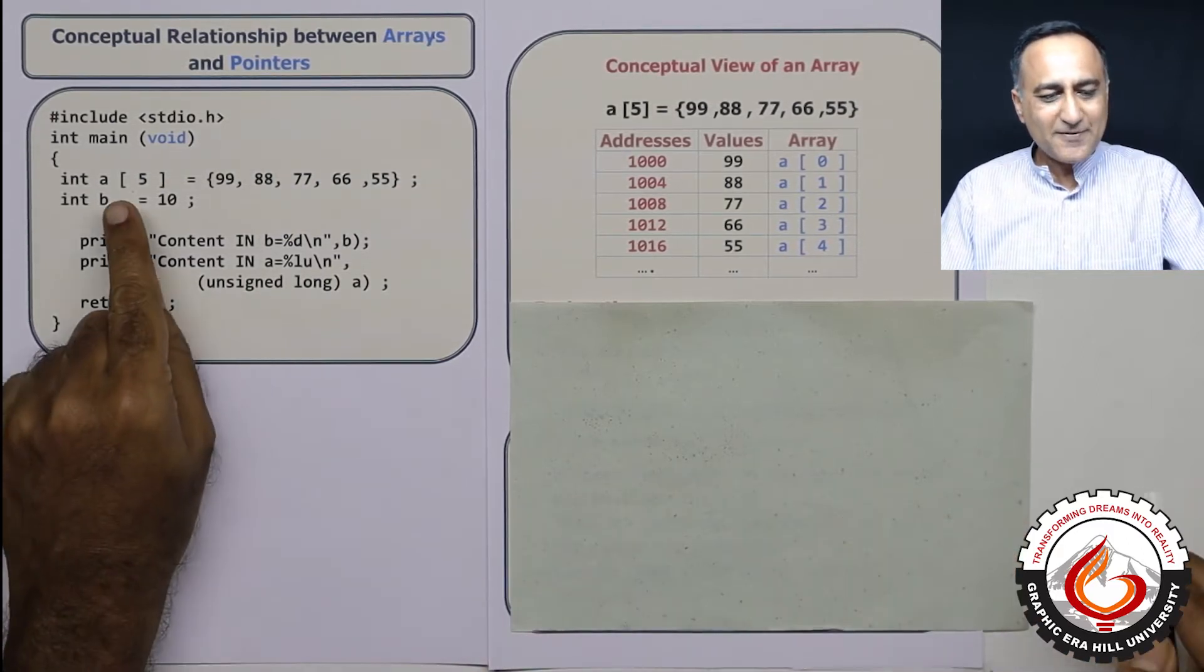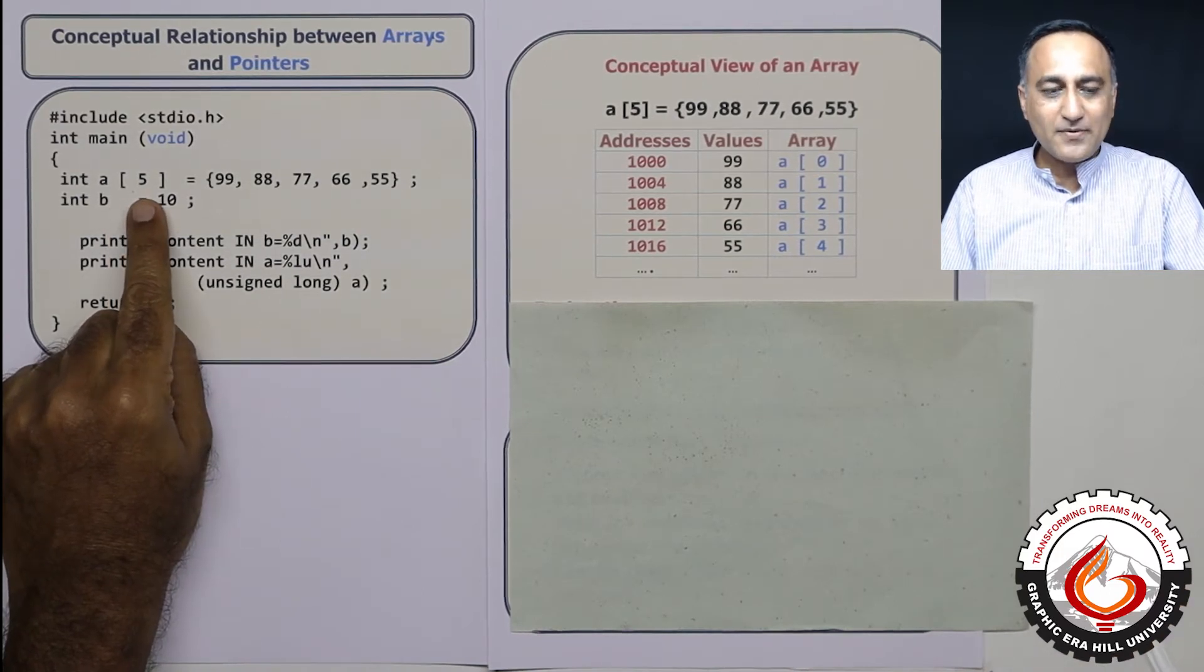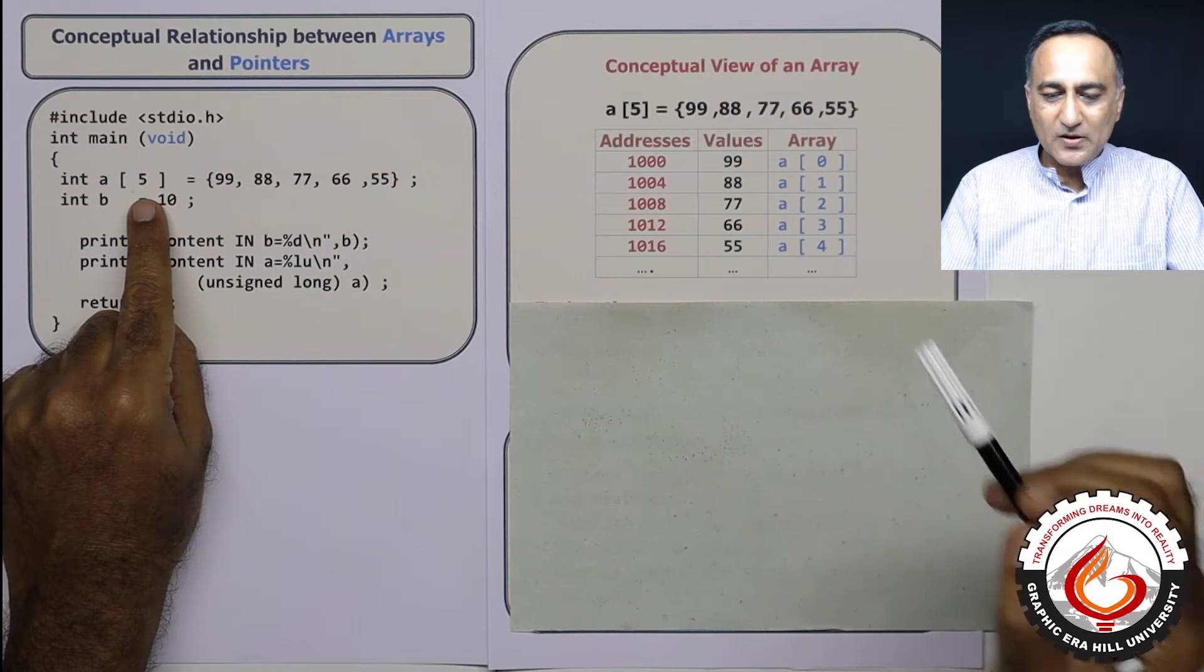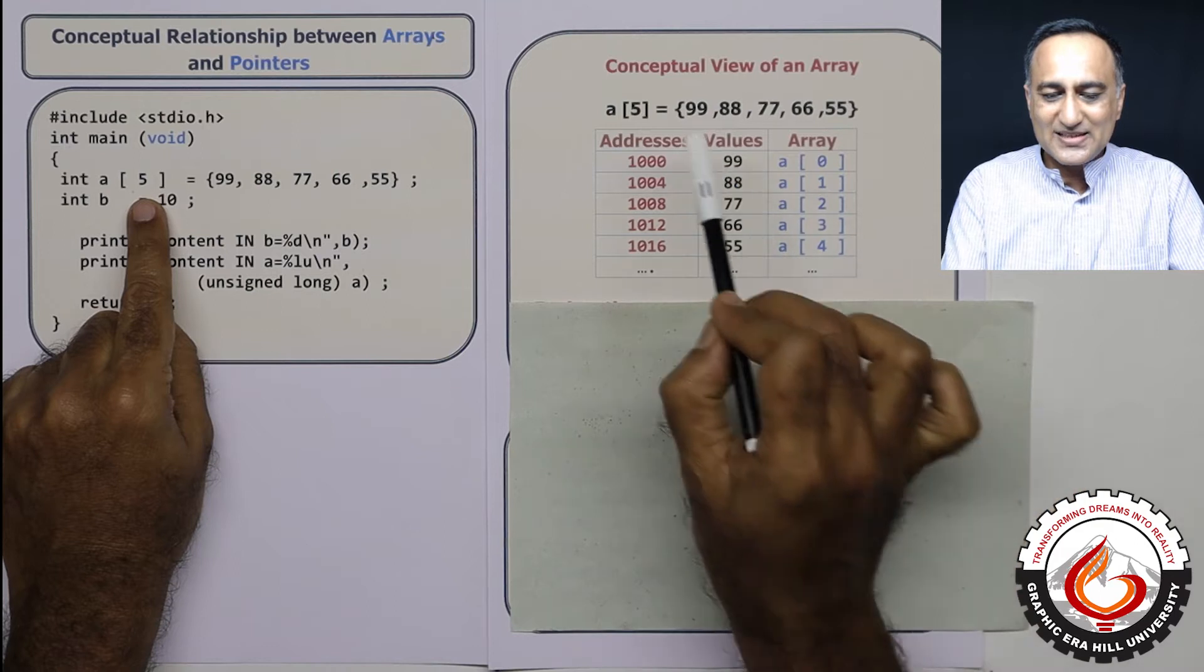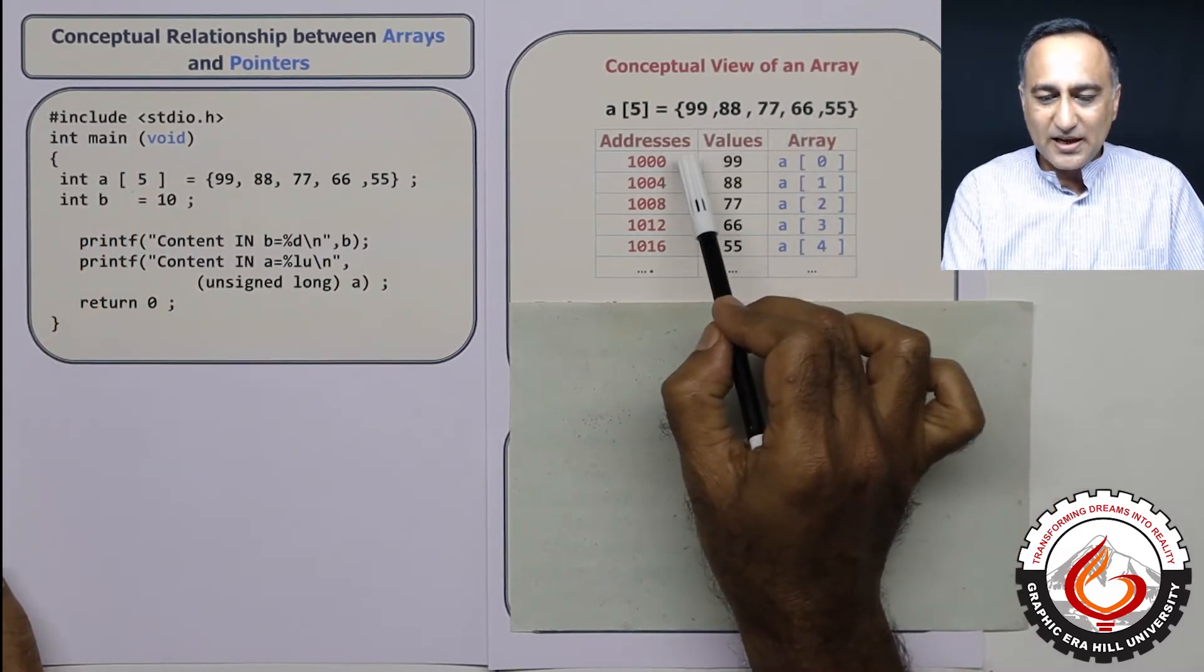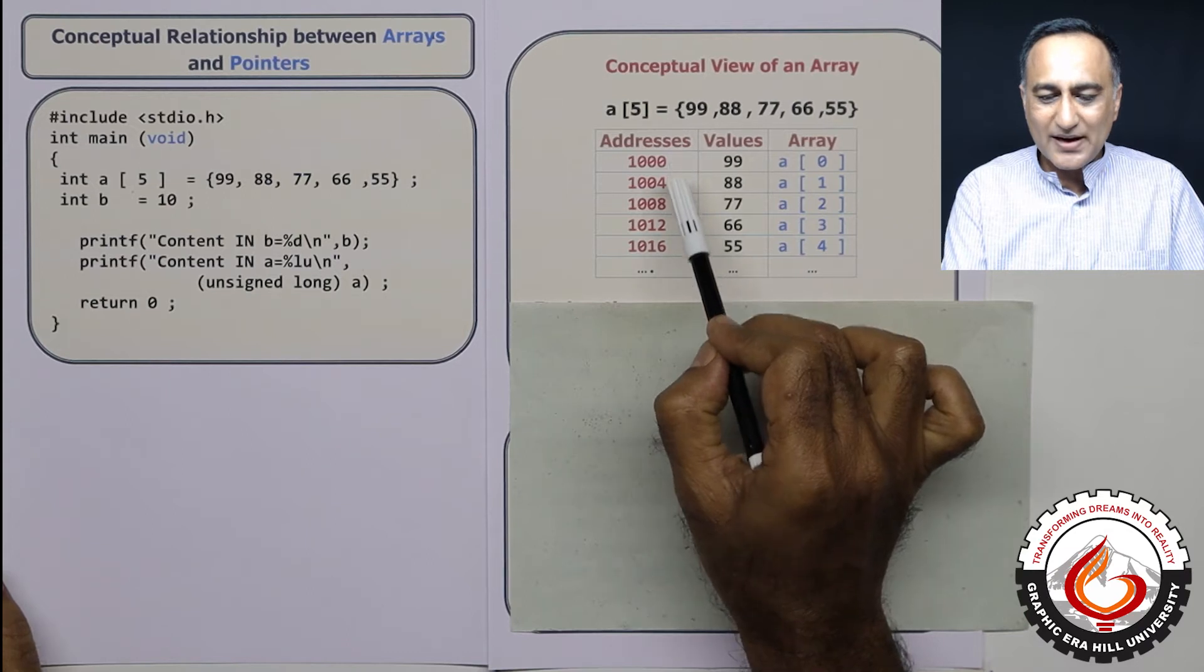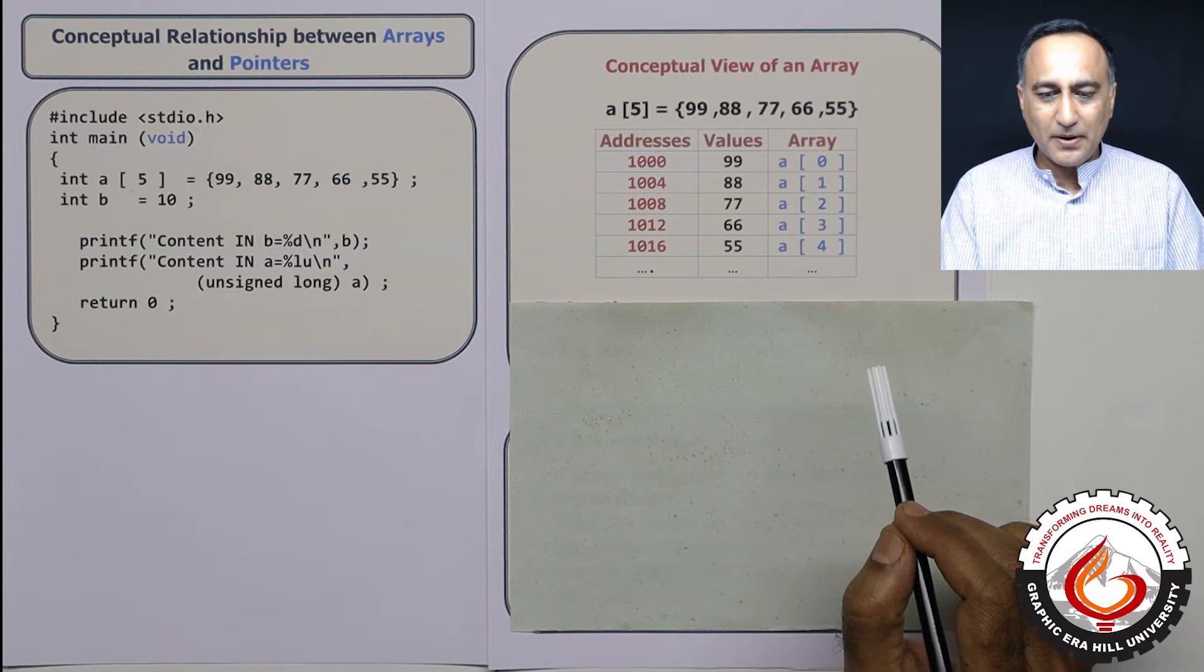So let's say first, I declare an array A consisting of five numbers. So this is how it will conceptually look in the main memory. Let us say this array A of five with these numbers is allocated the following addresses, assuming integer occupies four bytes.